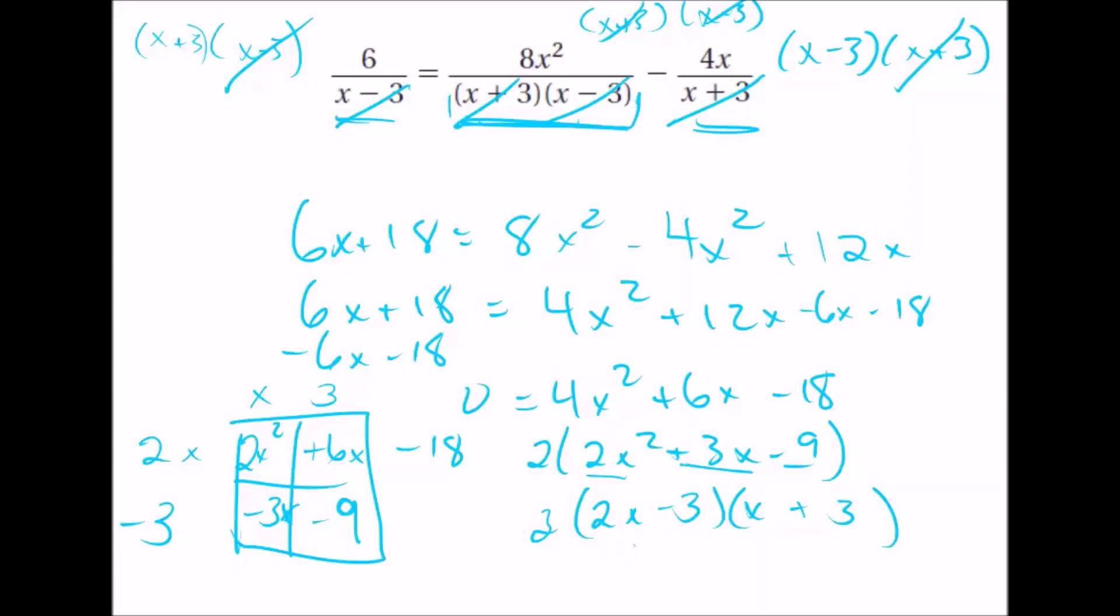So our factors, we set each of those equal to 0. 2x minus 3 equals 0. 2x equals 3. Divide, you're going to get 3 halves. And you're going to get x equals minus 3. So those are the two factors.